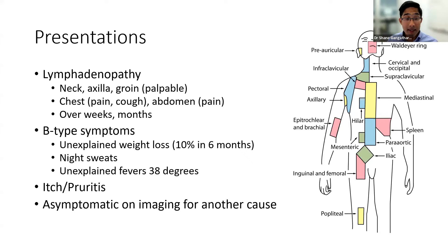There are lymph glands within the chest and abdomen too — you can't feel these. Other symptoms might be pain or cough from an enlarging chest mass, or abdominal pain from enlarging lymph glands in the abdomen. When these happen over weeks to months, it usually indicates an aggressive lymphoma. This is a cancer causing a lot of inflammation and releasing chemicals into the system.